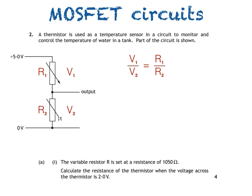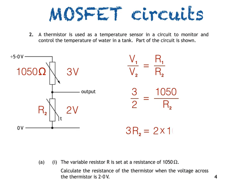We're told that the resistance of the variable resistor is 1050 ohms and the voltage across the thermistor is 2 volts. This means the voltage across the variable resistor equals the supply voltage 5 volts minus 2, which equals 3 volts. We can now substitute these values into our equation. To calculate R2, the resistance of the thermistor, we cross-multiply: 3R2 equals 2 times 1050. Dividing both sides by 3 gives R2 equals 2 times 1050 divided by 3, which equals 700 ohms.